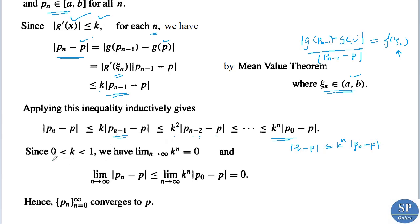Since k belongs to (0,1), we have lim_{n→∞} kⁿ = 0. Therefore, lim_{n→∞} |p_n - p| ≤ lim_{n→∞} kⁿ · |p₀ - p| = 0. So lim_{n→∞} |p_n - p| ≤ 0, which means the limit equals 0. Therefore p_n converges to p — that is, the sequence {p_n} for n = 0, 1, 2, … converges to the unique fixed point p.